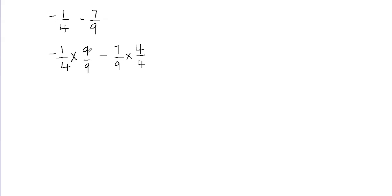The reason is that 9 divided by 9 is equal to 1, so you're really multiplying your fraction by 1. If you multiply negative 1 over 4 by 1, you're not changing its value. That's why we multiply by 9 over 9 and by 4 over 4 — it's basically just multiplying by 1, so I'm not changing the value of the fraction at all.